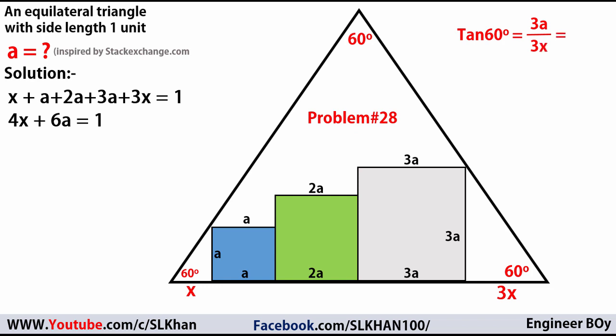Tangent of 60 degrees must be the perpendicular, which is 3a, divided by the base, which is 3x. 3 and 3 cross each other, so tangent 60 equals a/x. Tangent 60 is square root 3, so √3 = a/x. If we do cross multiplication, we get x = a/√3. We can put that value in this equation: 4x + 6a = 1.